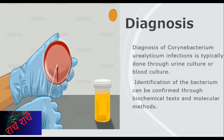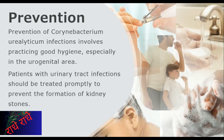Treatment usually consists of antibiotics to reduce or eliminate the bacterial infection. It is important to note that prevention of infections caused by this bacterium involves maintaining good hygiene practices, particularly in the urogenital area. This includes regular washing and cleaning of the genital area, especially after sexual activity, to prevent the growth and spread of bacteria. Furthermore, patients with urinary tract infections caused by Coronybacterium ureoliticum should receive prompt treatment to prevent the formation of kidney stones, which can lead to more severe health complications. Treatment may involve the use of antibiotics or other medications, as determined by a healthcare professional. Overall, practicing good hygiene and seeking prompt treatment for infections can help prevent the spread and complications of Coronybacterium ureoliticum infections.